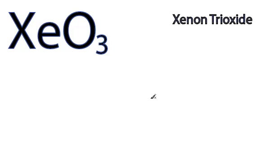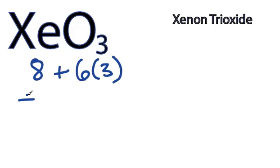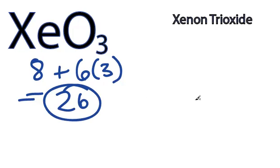This is Dr. B. Let's do the XeO3 Lewis structure, xenon trioxide. Xenon is in group 8, 8 valence electrons. Oxygen 6, we've got 3 of them. 8 plus 18, 26 total valence electrons.